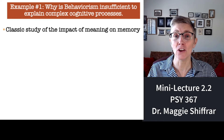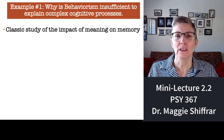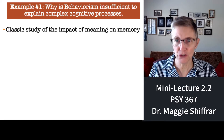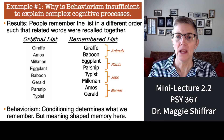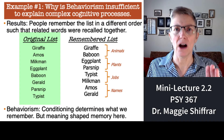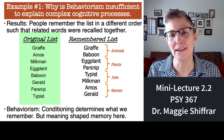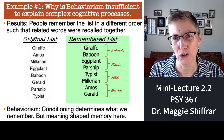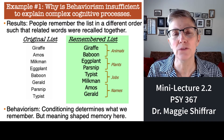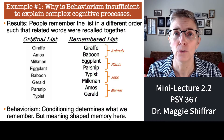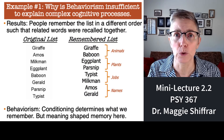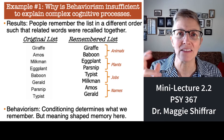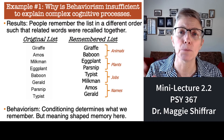Write down all the words you could remember. If you haven't yet, hit pause. If you have, check your work against this slide. On the left is the order in which I actually read the words. On the right is the order in which people typically recall the words. Notice that people are recalling the words in a different order than the order in which they heard the words.